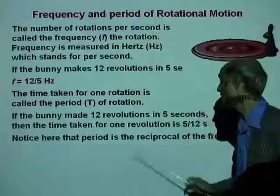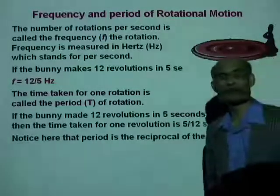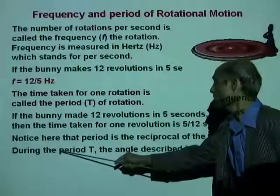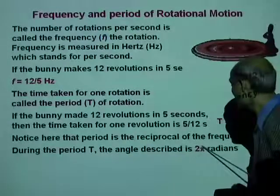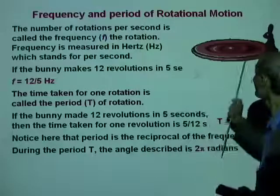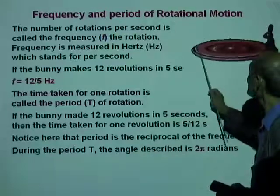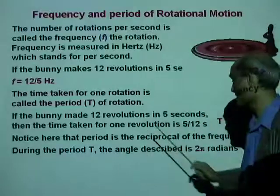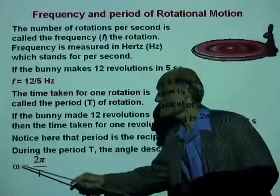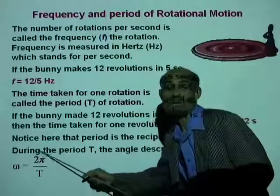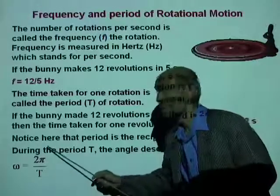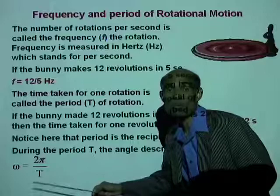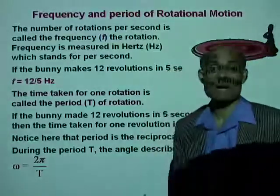Notice that the period is the reciprocal of the frequency. During the period T, the angle described is 2 pi radians. The period means the time taken to go around once, so the angular displacement during one period is 2 pi radians. Therefore, omega equals angular displacement divided by time, which gives omega equal to 2 pi divided by the period.